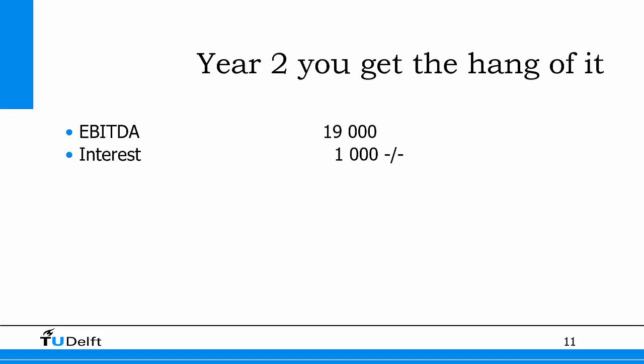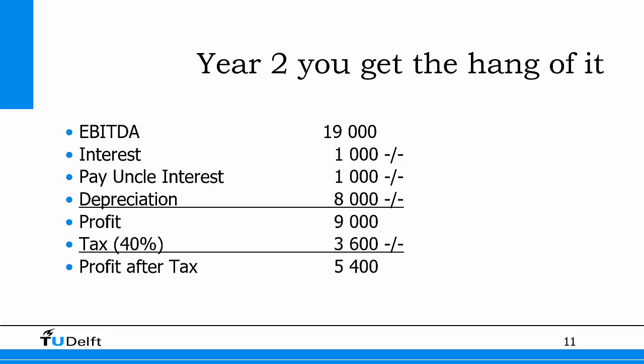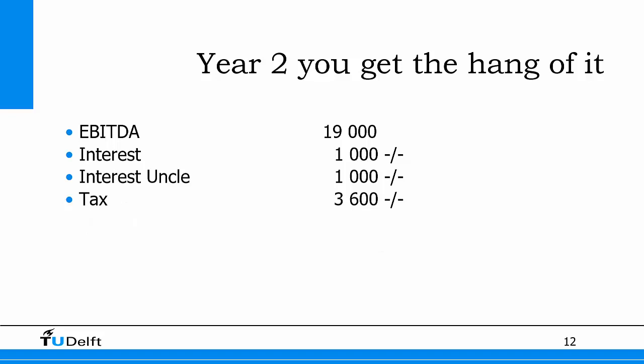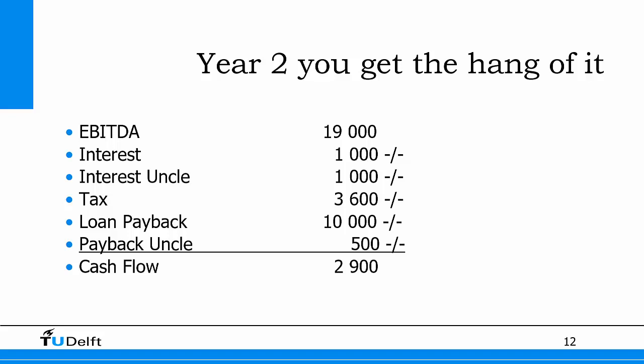In the second year you get the hang of it. Your EBITDA is already 19,000. Your interest on the bank loan has gone down to 1,000 because you repaid 10,000, leaving 20,000 outstanding. However, you also have to pay back your uncle: 200% of 500 means another 1,000 in interest. Including depreciation, your earnings before tax is 9,000. Tax at 40% is 3,600, leaving profit after tax of 5,400. On the cash flow side, after interest, tax, and both loan repayments, you end up with a cash flow of 2,900 — which is less than your profit.